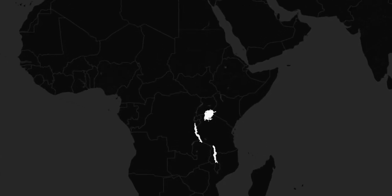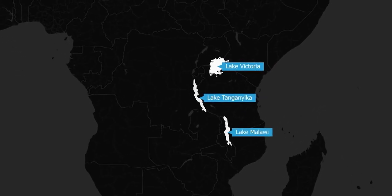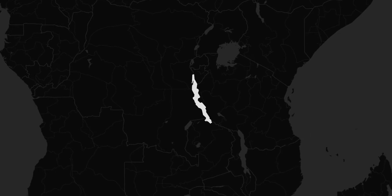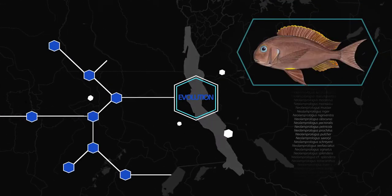Yet by far the most species-rich adaptive radiations have occurred in the East African Great Lakes: Victoria, Malawi, and Tanganyika. Here at the Zoological Institute of the University of Basel, we have specialized on the cichlid fishes from Lake Tanganyika, where more than 250 species have evolved within less than 10 million years.